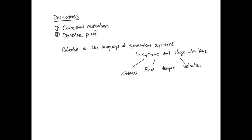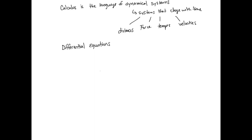A quick note about notation. We're going to be using differential equations. A differential equation is something that has a derivative in it. For example, if I say y-double-dot plus y equals u-dot, this is a differential equation because we have the second derivative of y plus y as a function equal to the derivative of u. Another way of writing this exact same equation — those double dots mean derivative with respect to time — would be d²y/dt² plus y equals du/dt.